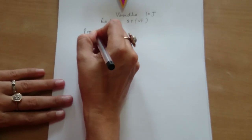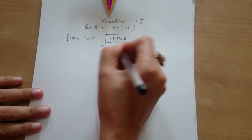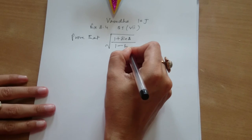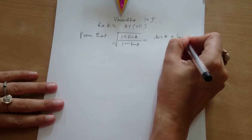Prove that under root of 1 plus sin A upon 1 minus sin A is equal to secant A plus tan A.